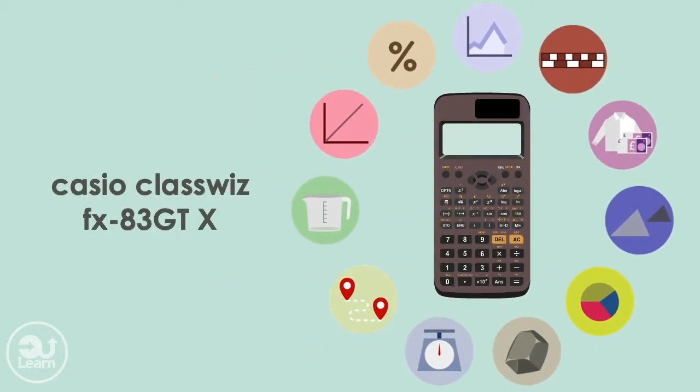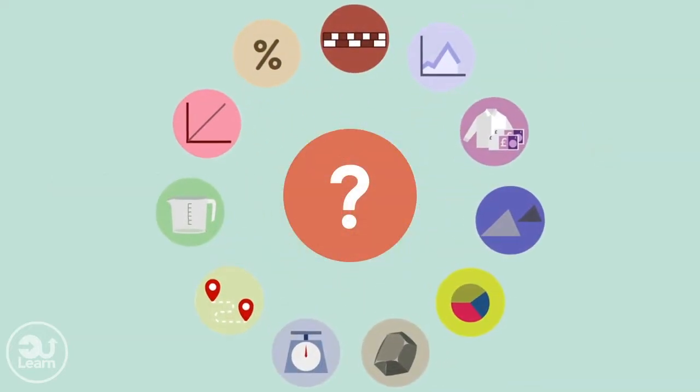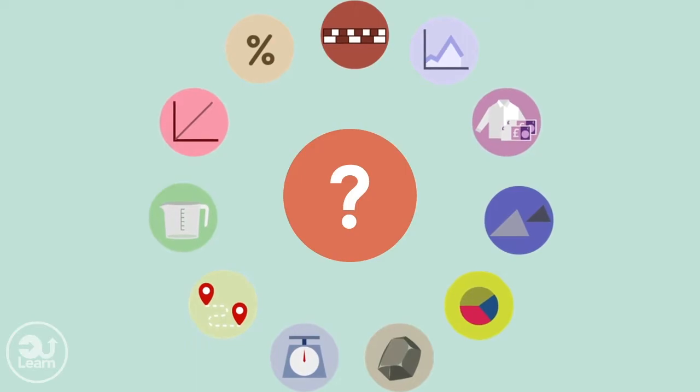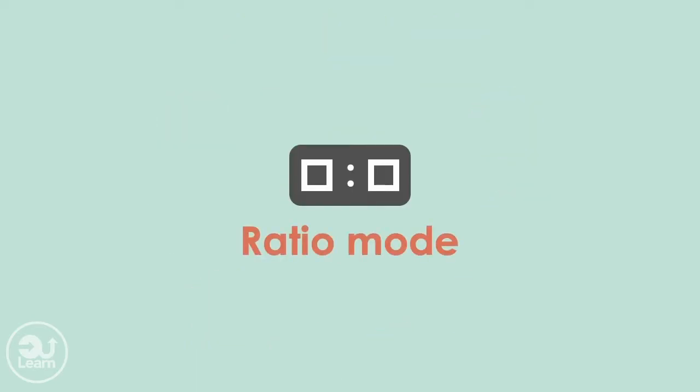I found another feature on the Casio ClassWiz that blew my mind. I had no idea this was here. I discovered it a while back and I've been showing all my students because it works with over 10 different topics and types of questions and it's quite powerful. This feature is the ratio mode. This is the ultimate proportion function that can answer questions quickly that can be used throughout the entire maths curriculum.